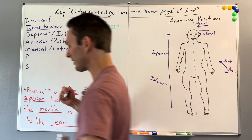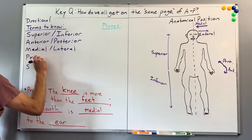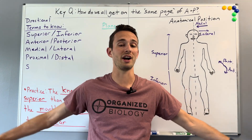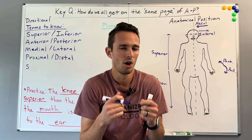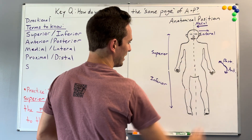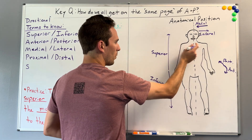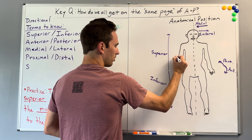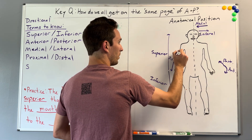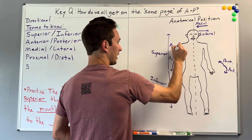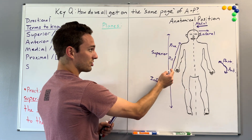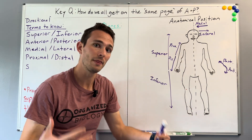Moving on, we've got proximal and distal. If you are in the proximity of somebody, you are really close to them. Whereas if you're at a distance, you're further away. This usually references an appendage like the leg or arm. If we go further away from the torso, we call that distal. If we're going closer to the torso or the attachment point, we call that proximal. For example, the carpals — the wrist bones — are more distal to the elbow. The elbow would be more proximal.